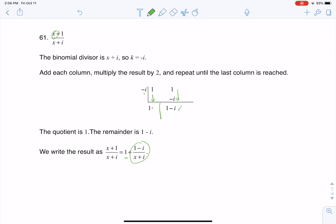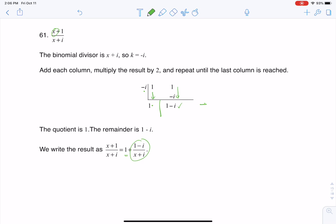And here is my remainder. So if I look at my coefficients, I've got a one here. That's going to be the one, and then plus my remainder of one minus i over my original divisor.